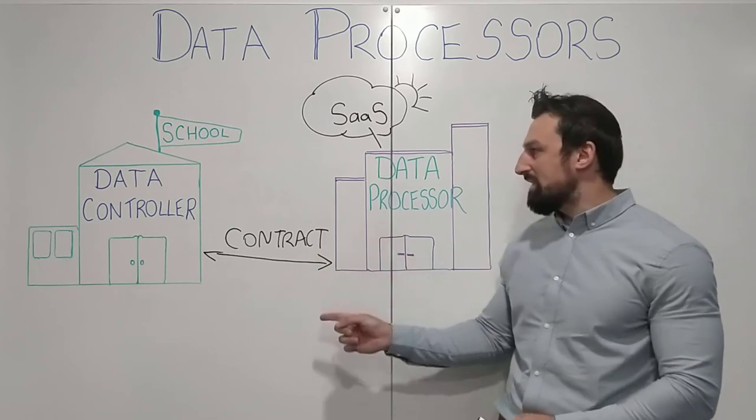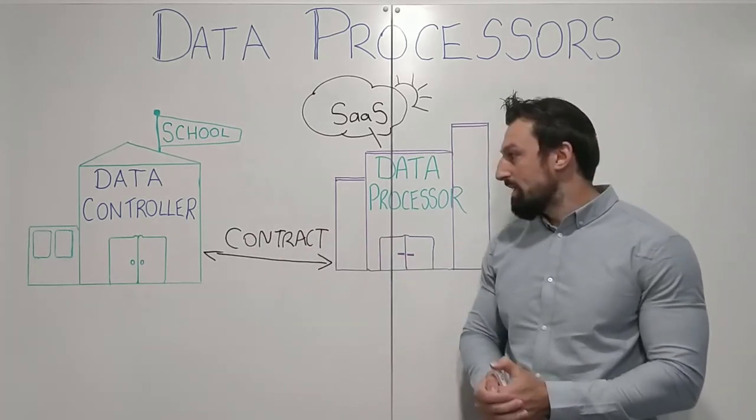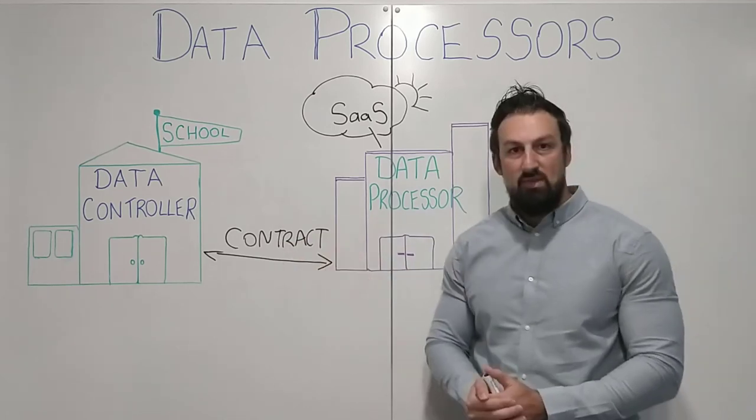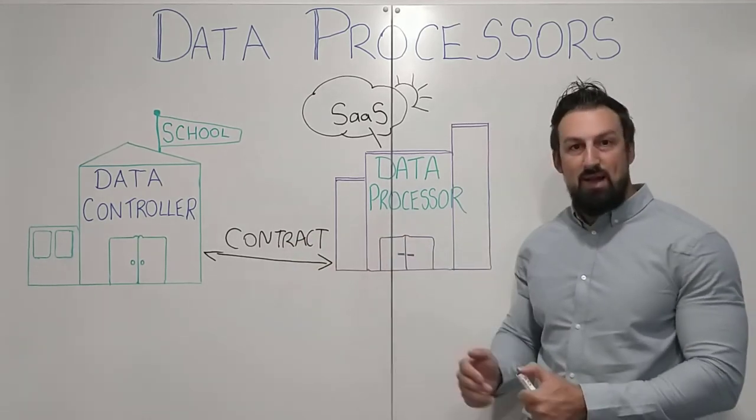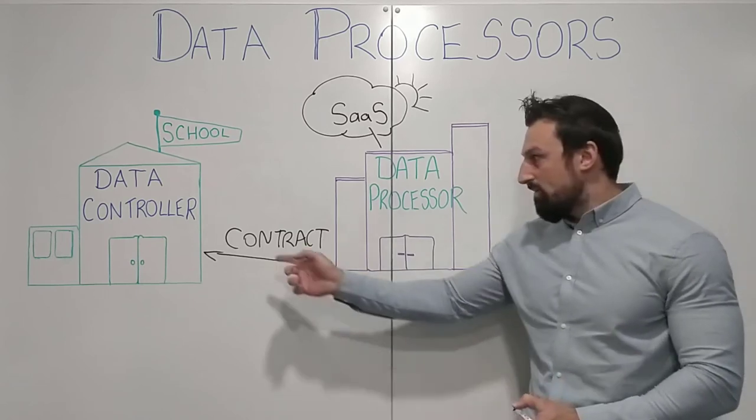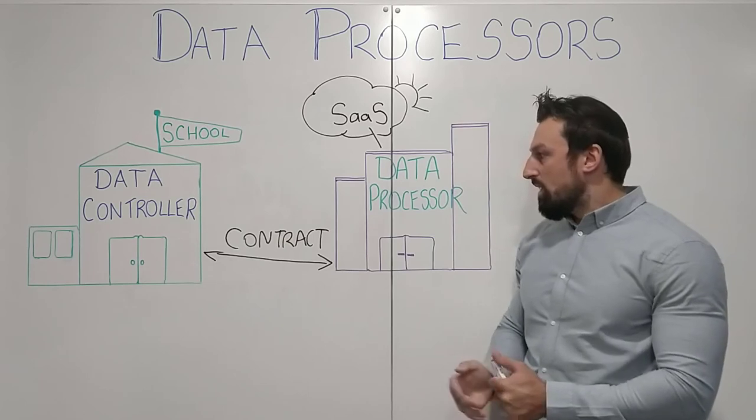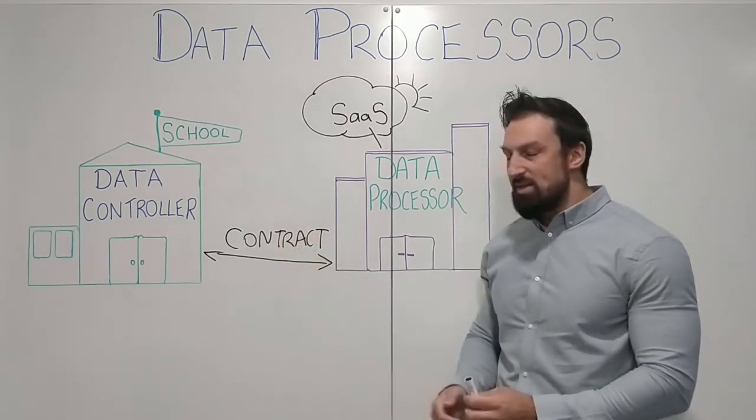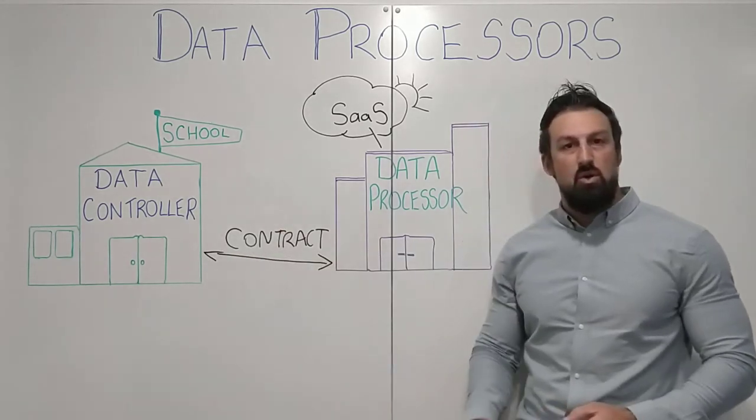It will cover things like data security. The processor has to give sufficient guarantees that it will protect the school's data. It will have to notify the school of data breaches. It will talk about if it wants to use subcontractors, how the school's consent will be sought first.